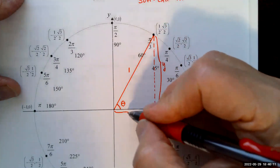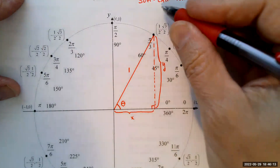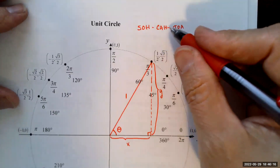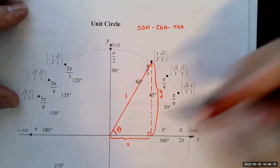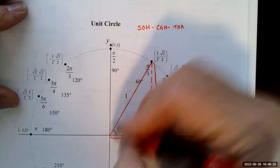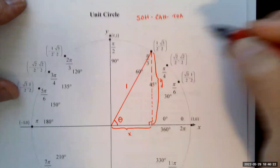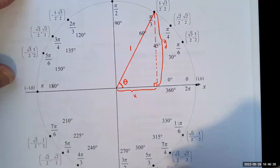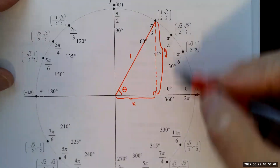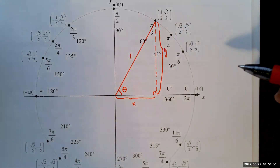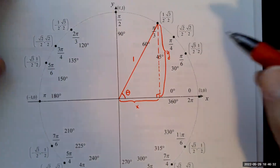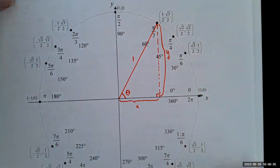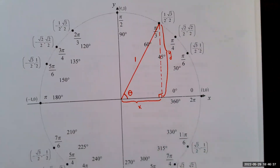The cosine of theta is adjacent over hypotenuse — x over one — so cosine theta equals x. In this configuration, the x-coordinate is one-half. You should have gone through the exercise in pre-calculus of finding all these ordered pairs by drawing the special triangles. With the unit circle, you automatically know what the sine and cosine are.